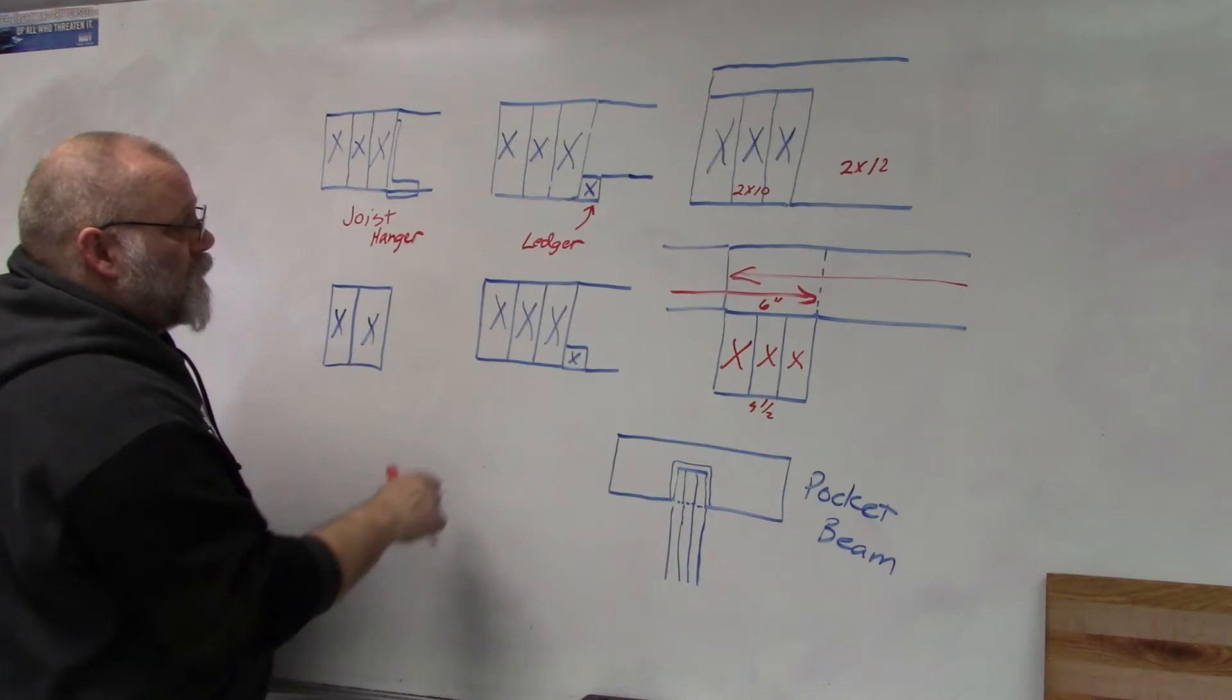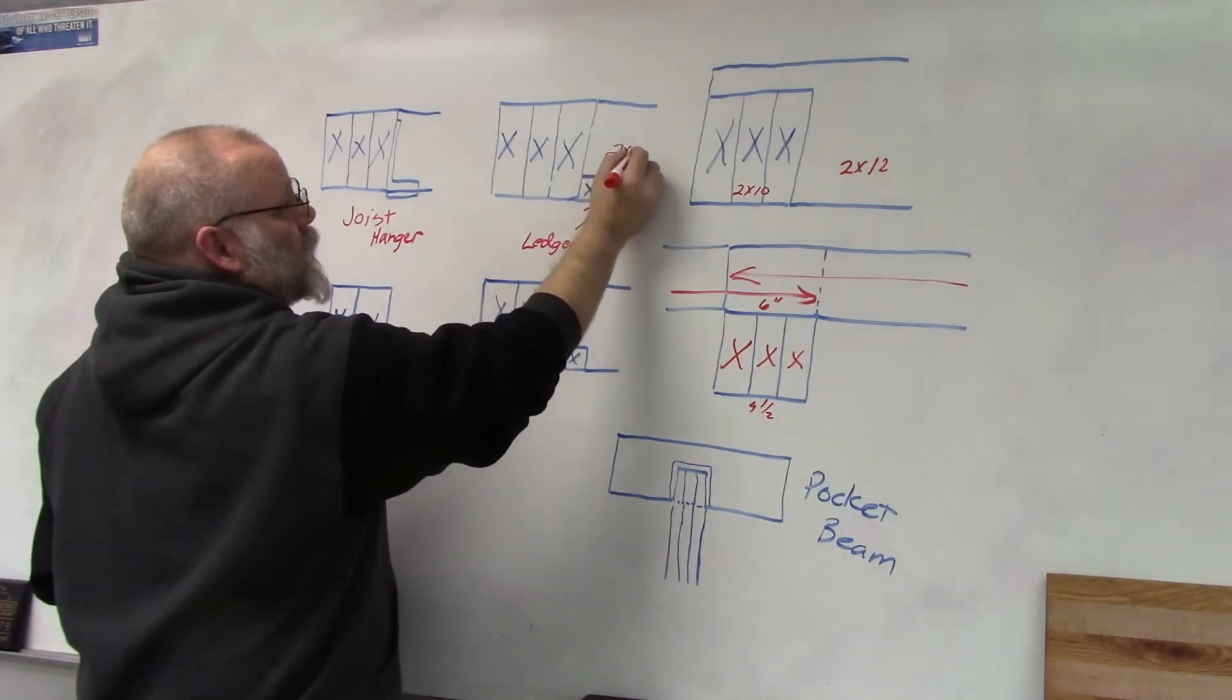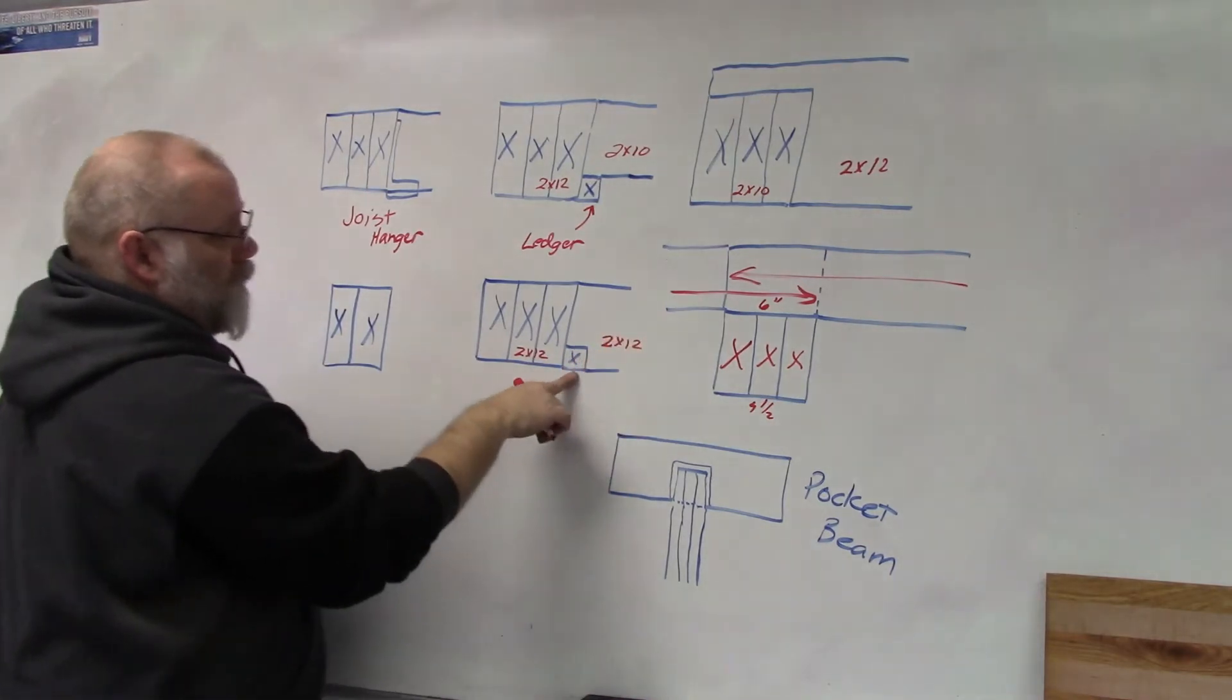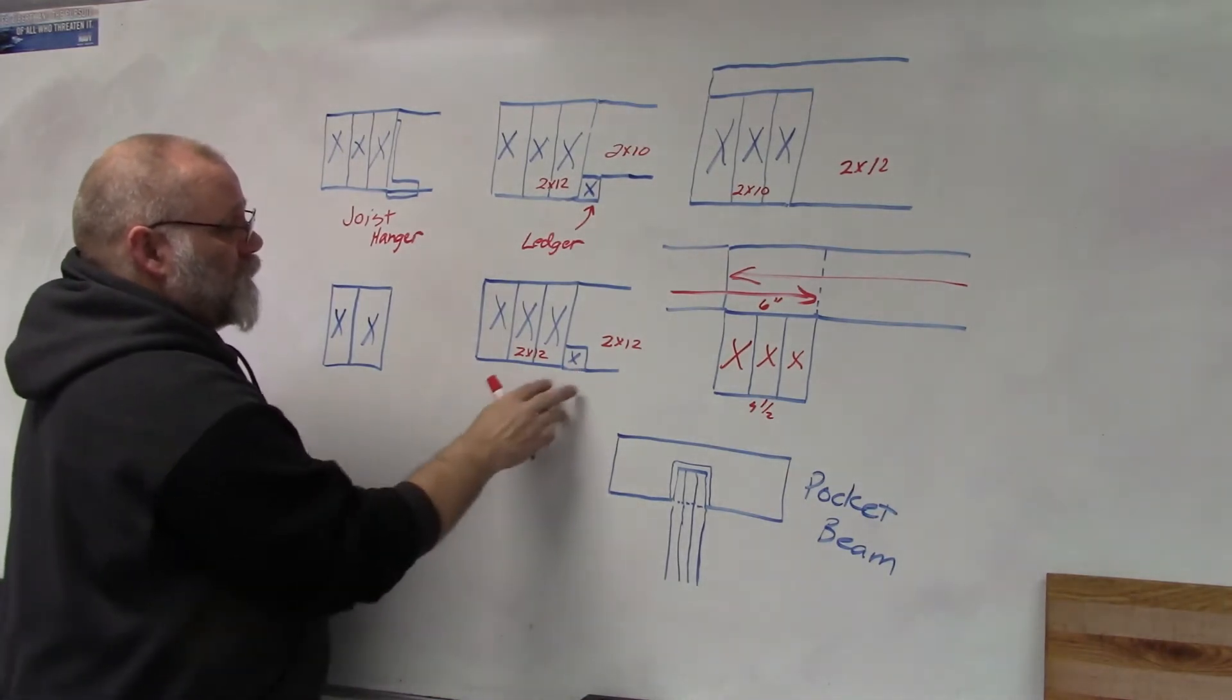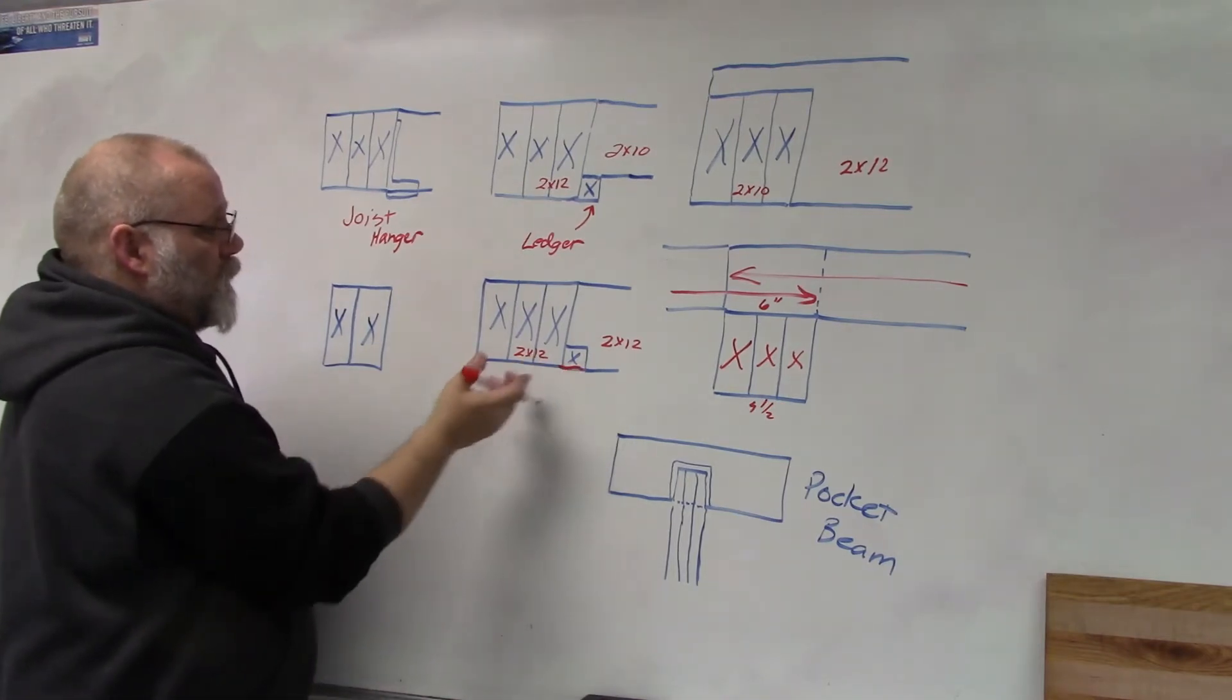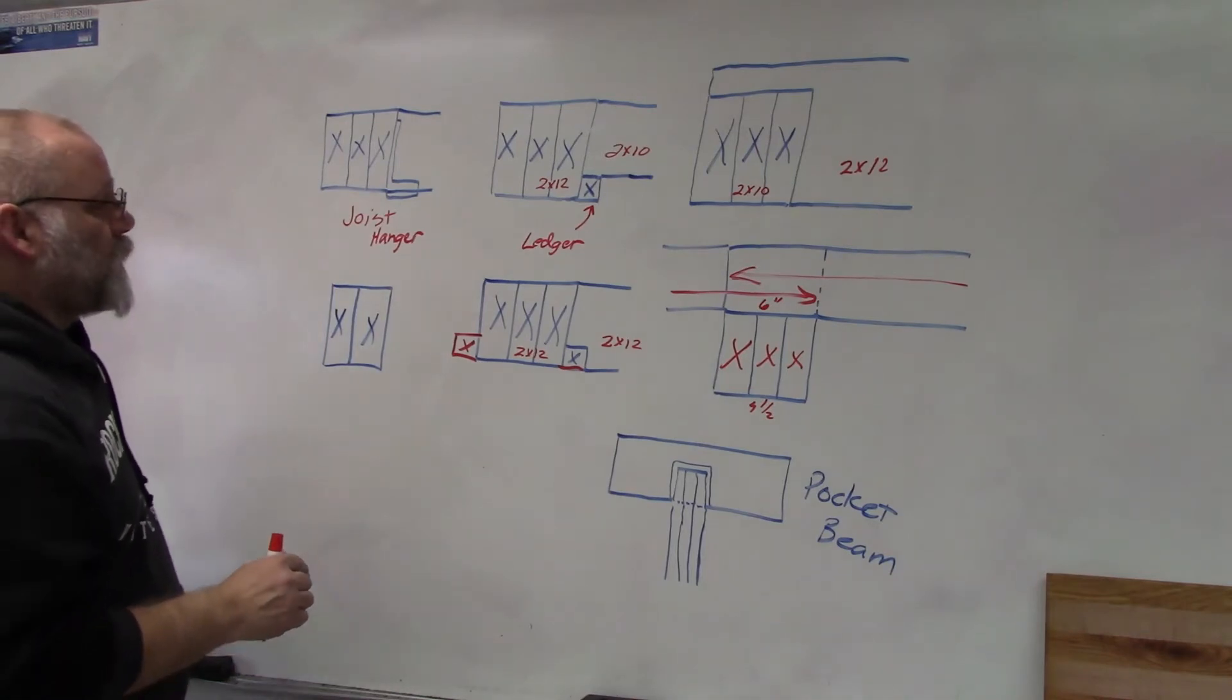The next method here would be a three-member beam with a ledger board, but this time where we used let's say again this would be like a two-by-ten, this would be a two-by-twelve. In this one they're using the two-by-twelve here and then they're using the two-by-twelve here and they're just notching out for that ledger board to give it some extra strength. So instead of using joist hangers we're going to use this ledger board. So you're buying a two-by-four and ripping it in half and you can put half of it on each side of the beam.